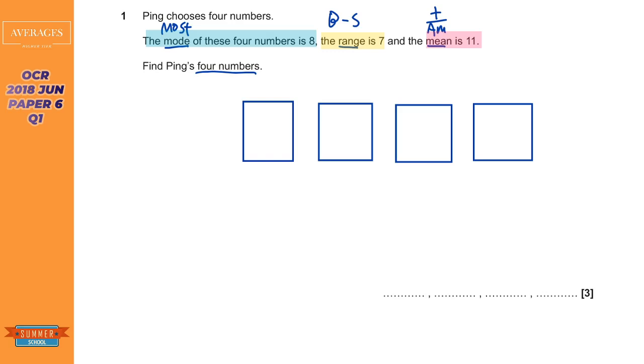I'm going to focus on the mode first. The mode it says is eight. Now there's only four numbers so for the mode to be eight we need at least two of them to be eight. I'm going to guess that these two are eight. These are going to be in order of size from smallest to biggest and I have no idea that it's going to be the two on the left hand side. They could be the two on the right.